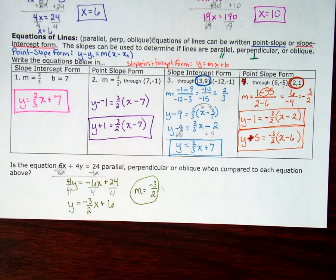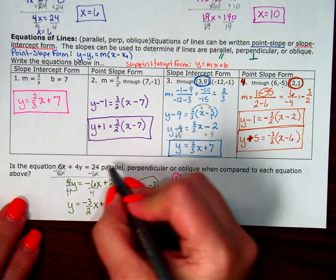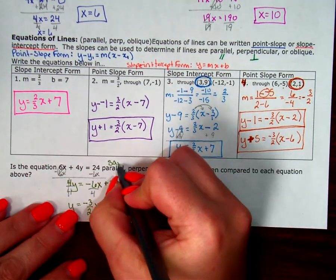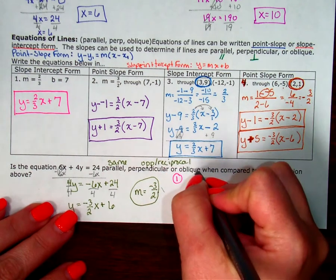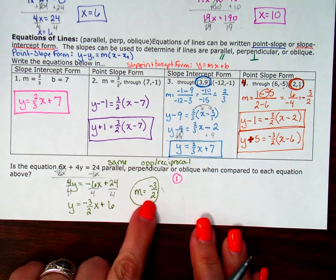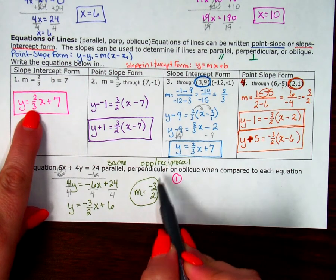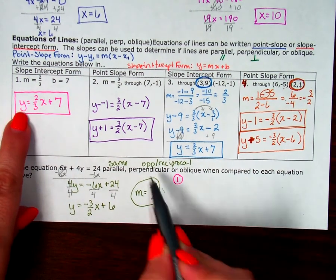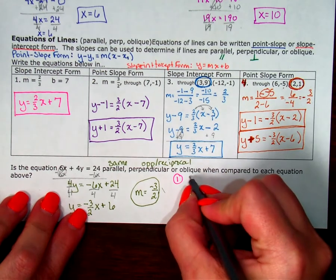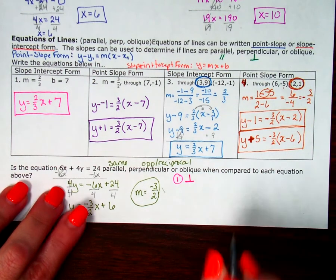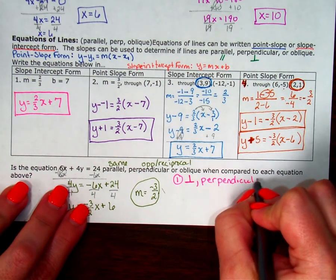Comparing to number 1, y equals 2 thirds x plus 7: I have negative 3 halves and positive 2 thirds. They're definitely not the same slope, so not parallel. Are they opposite reciprocals? Positive and negative — yes, they're opposite. And 2 over 3 versus 3 over 2 — yes, they're reciprocals. So they are both opposite and reciprocals, which means these lines are perpendicular.